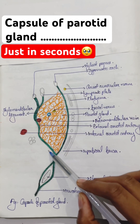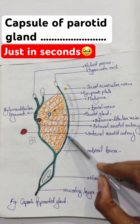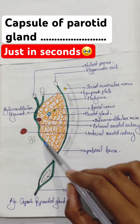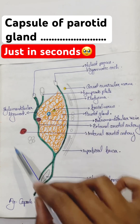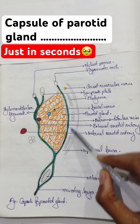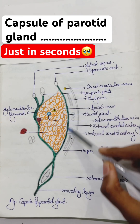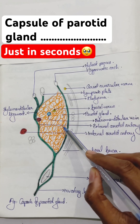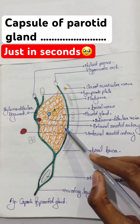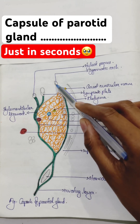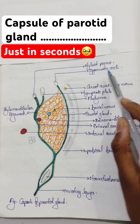It has two layers: the superficial fascia and the deep fascia. The superficial fascia is thin and is adherent to the gland and attached above to the zygomatic arch.